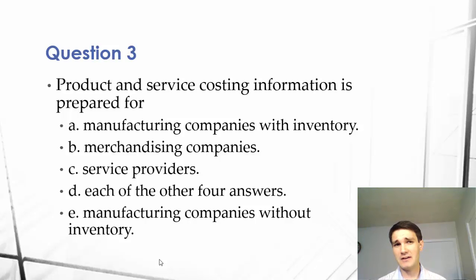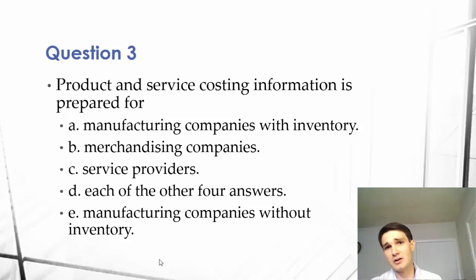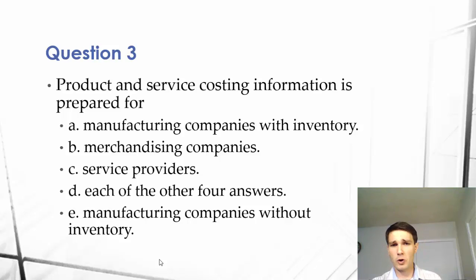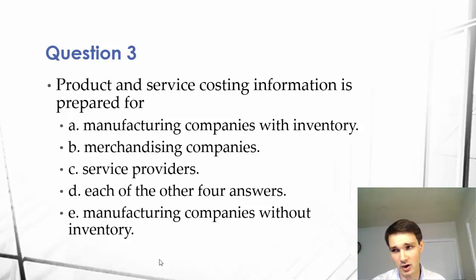To understand this question, we have to understand what it's asking us — it's asking us what product and service costing information is prepared for. Well, product costing information tells us how much our inventory costs or how much it costs us to make a certain item if we're manufacturers. Or service costing information requires us to figure out how much it costs to produce an item labor-wise. So let's say I run a restaurant — I have to figure out exactly how much my cooks are costing me and how much my food is costing me per item, to really figure out how much I should charge.